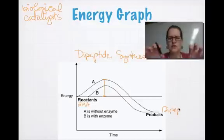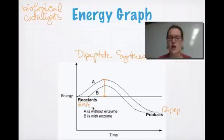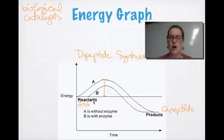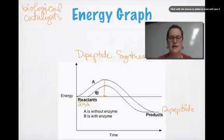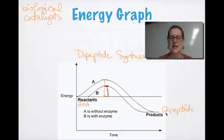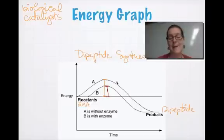With a test tube without an enzyme — line A — you've got to put this much energy in to get those amino acids to form a peptide bond. Enzymes are cool because they make it so that I don't need quite as much energy. The exact same reaction between the exact same amino acids produces the exact same product at a much lower energy input, which means it can happen faster.